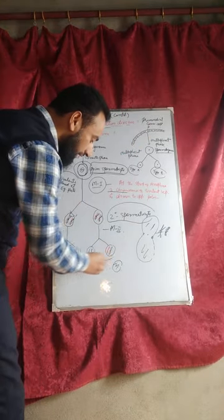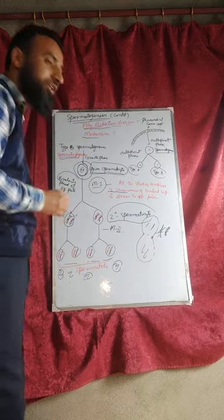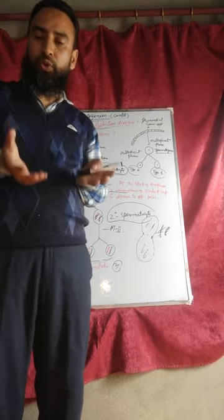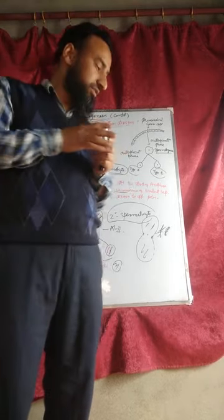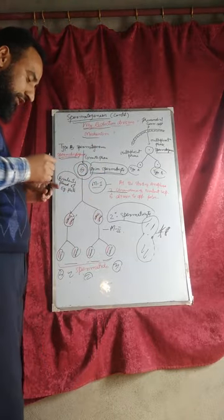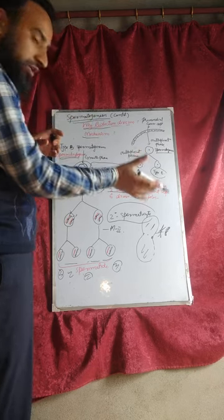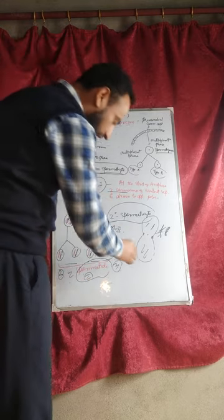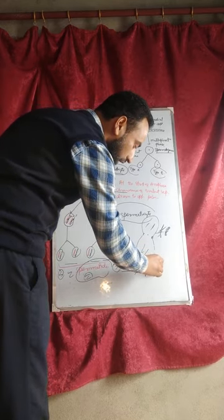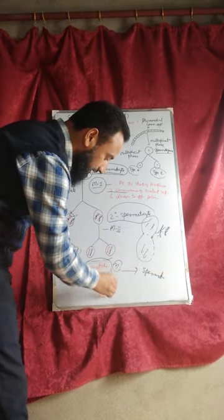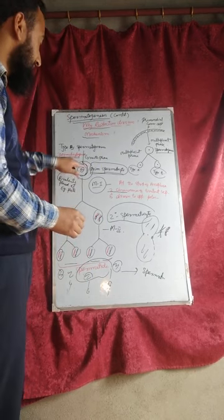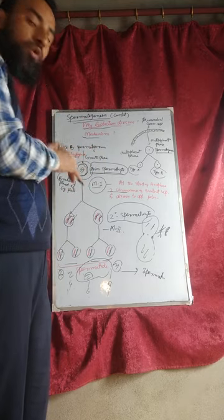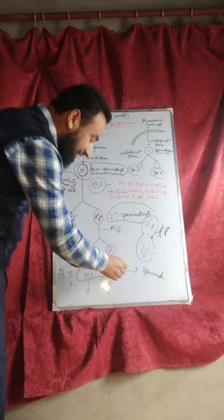These spermatids now have a haploid set of chromosomes — this is why we say that spermatids are haploid. But these are not motile, as they are very heavy; they contain a nucleus, mitochondria, centrioles, and Golgi complex. So each primary spermatocyte will result in only four spermatozoa.